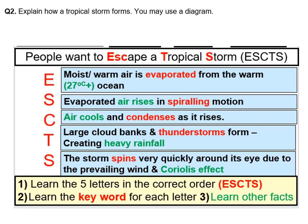We've taught you the formation of tropical storms using five letters: ESCTS — shortened from 'escape', 'tropical', and 'storm'. E means evaporated, S means spiraling, C means condenses, T is thunderstorms, and S is spins. Once you have those five words you can build the rest of the answer, including the green words and a full sentence beyond that.